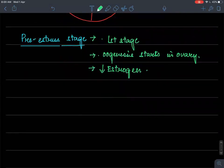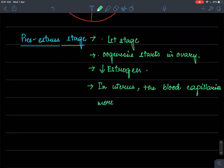But there are some changes in the uterus. So in uterus, the blood capillaries prepares itself and becomes more crunched, and the muscles become more active.